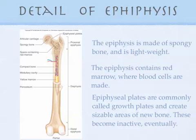Also in the epiphysis, there are areas with a slightly different color and texture called epiphyseal plates, commonly called growth plates. This is where sizable areas of new bone are created. For a toddler's bones to develop into the size of a teenager's or full-grown adult's, there has to be a lot of mitosis — a lot of new bone created. Eventually, when you reach full height, these plates become inactive.